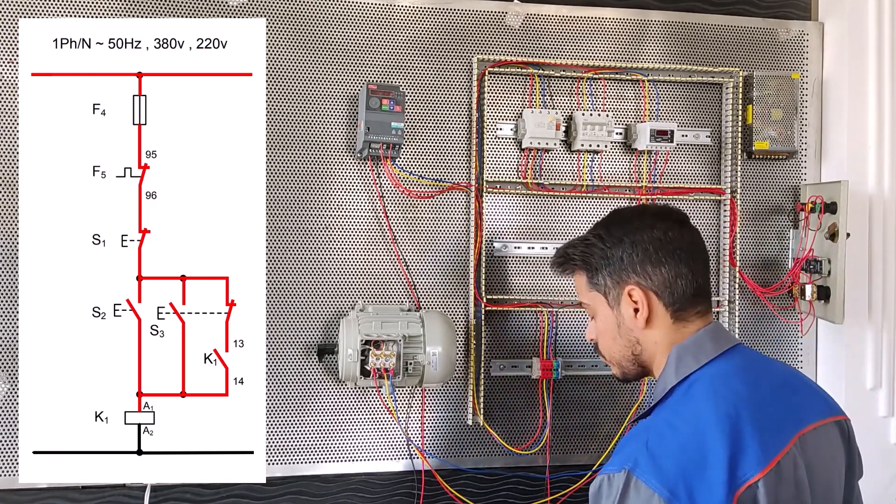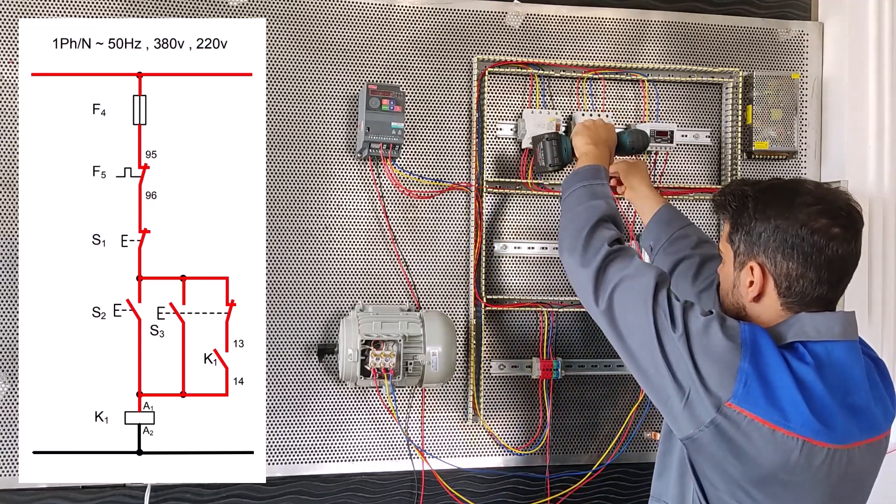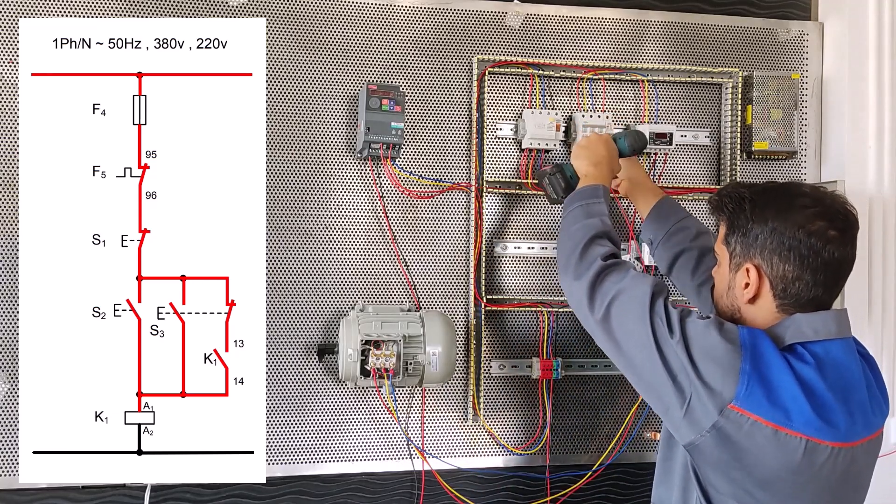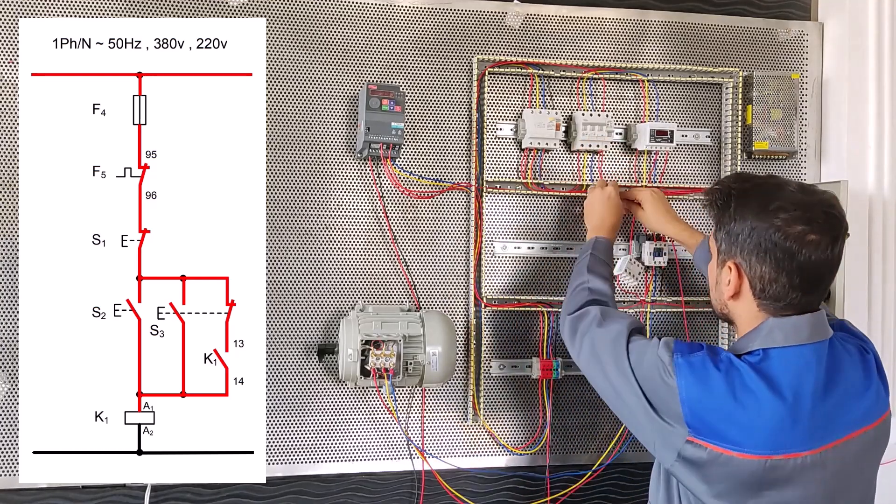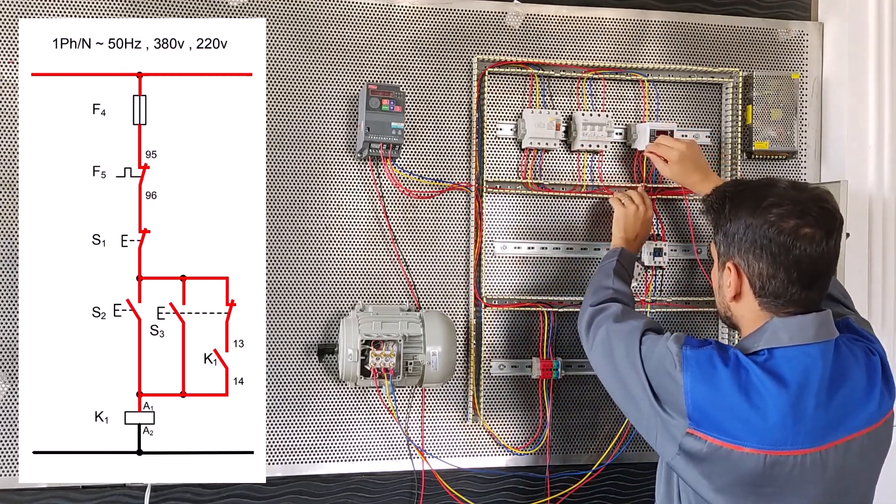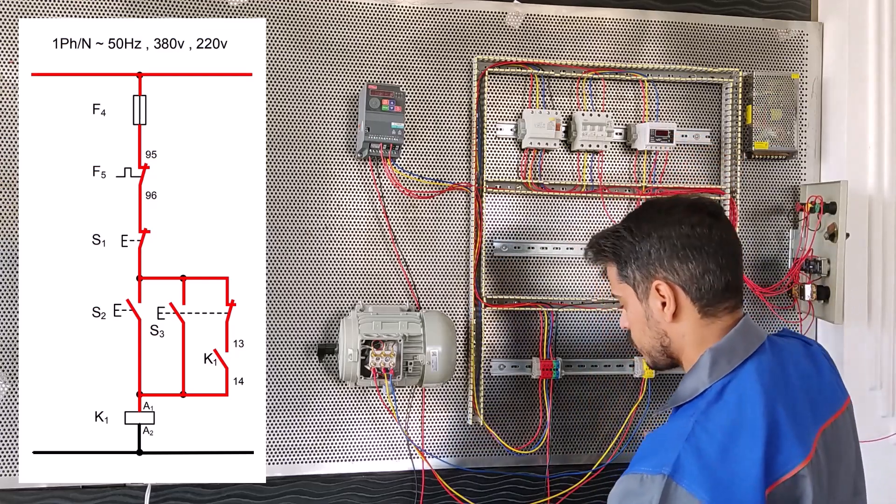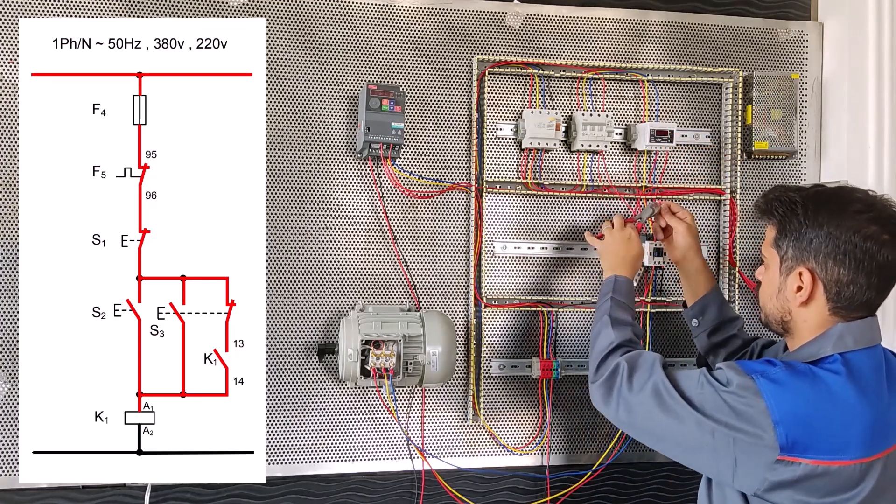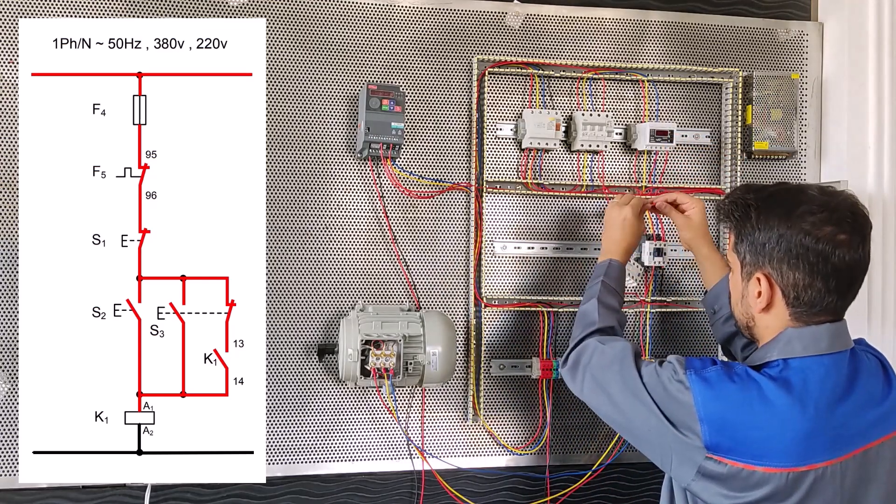This is the load control. This is the control circuit of this board. Now we have to connect the phase and the neutral of the load control. We connect S0 to the load control.